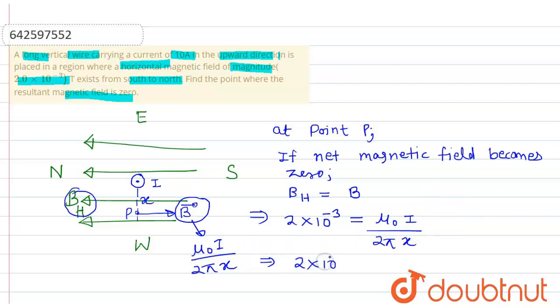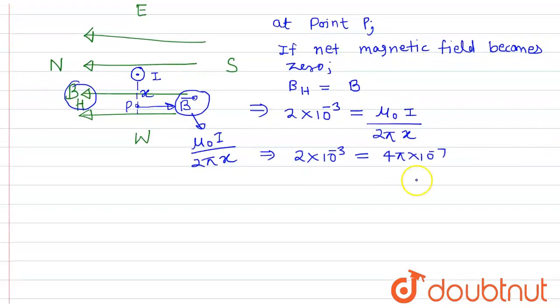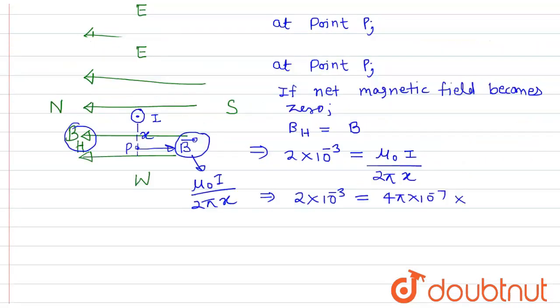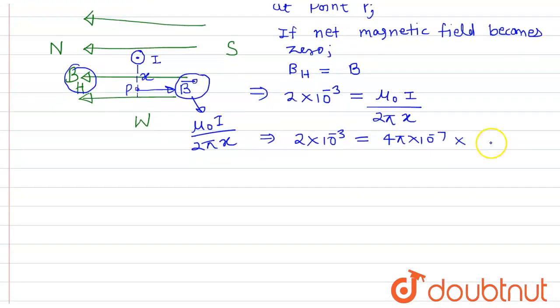So this will be 2×10⁻³, μ₀ can be written as 4π×10⁻⁷ and current in the question is given as 10 ampere. So this will be equals to 10/2π, so this is 2πx, so 2π will cancel, 4π by 2, 2 will cancel 2.